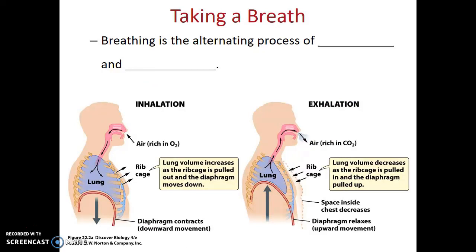Breathing is the alternating process of inhalation and exhalation. We breathe in and air moves into our lungs; we breathe out and the air leaves. By expanding our ribcage and contracting our diaphragm, we decrease the pressure within our lungs, and it's actually the air pressure of the atmosphere which forces itself into our lungs at this lower pressure. When we want to breathe out, we relax our diaphragm and compress our ribcage, which increases the air pressure in our lungs, forcing that air out because the air pressure outside is now less than the air pressure inside.